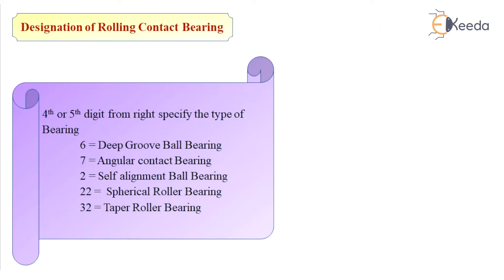The fourth and fifth digits from the right specify the type of bearing: 6 indicates a deep groove ball bearing, 7 indicates an angular contact bearing, 2 indicates a self-aligning ball bearing, 22 indicates a spherical roller bearing, and 32 indicates a taper roller bearing.